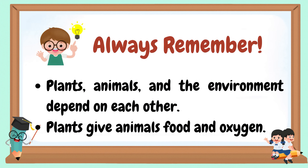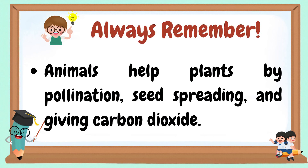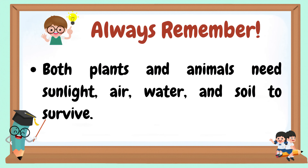Always remember: plants, animals, and the environment depend on each other. Plants give animals food and oxygen. Animals help plants by pollination, seed spreading, and giving carbon dioxide. Both plants and animals need sunlight, air, water, and soil to survive.